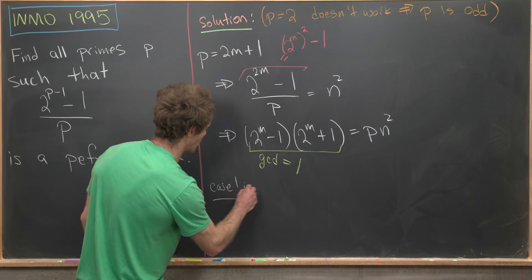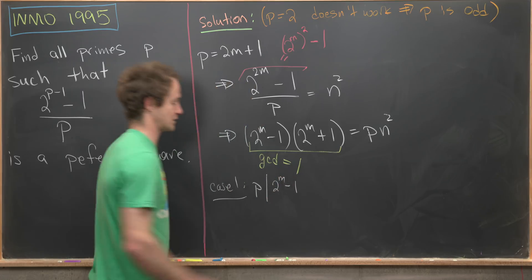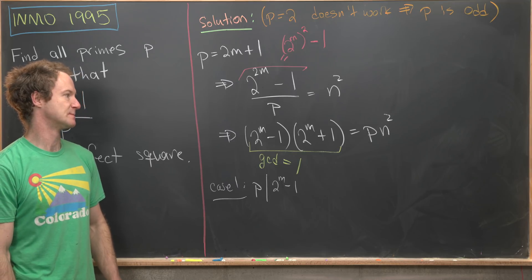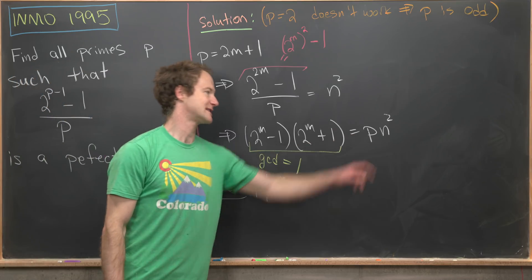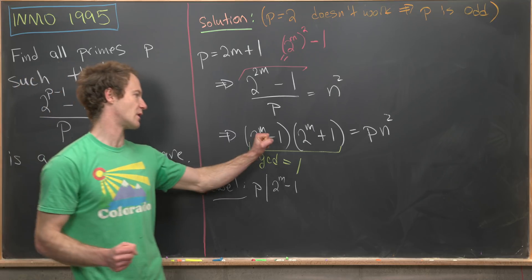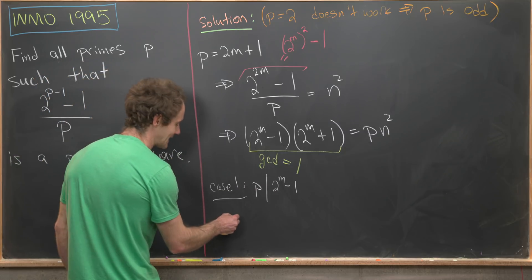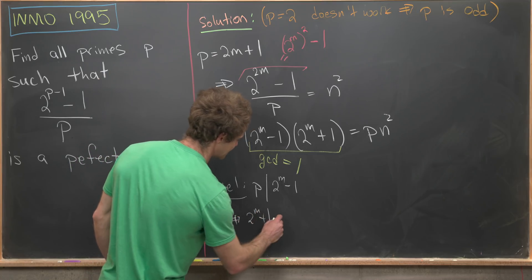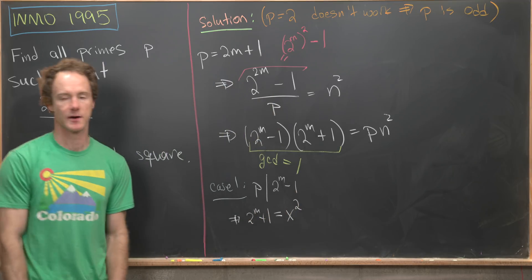But the fact that the GCD of these two numbers equals 1 tells us that this prime is only a factor of one of them. So let's break that into cases. That'll break us into case number one, which is if p divides 2^m - 1. But if p divides 2^m - 1, well, then that means that p does not divide 2^m + 1. But then all that's left over is a perfect square. We can't split the prime factors of that perfect square between these two objects because their GCD is 1. So that leaves us with the conclusion that 2^m + 1 is a perfect square. So maybe we'll call that perfect square x^2.